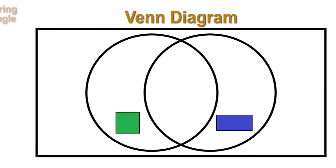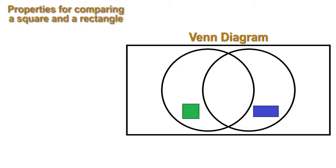Let's say that someone gives us a list of properties that need to be sorted into the Venn diagram, comparing the square and the rectangle. Here is the list of properties.